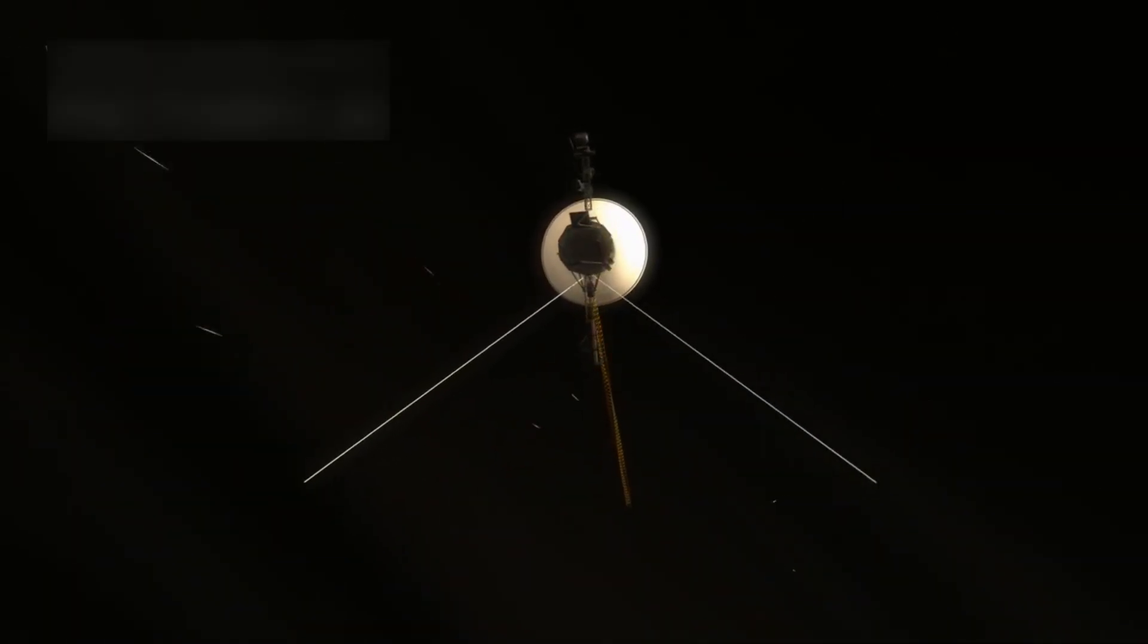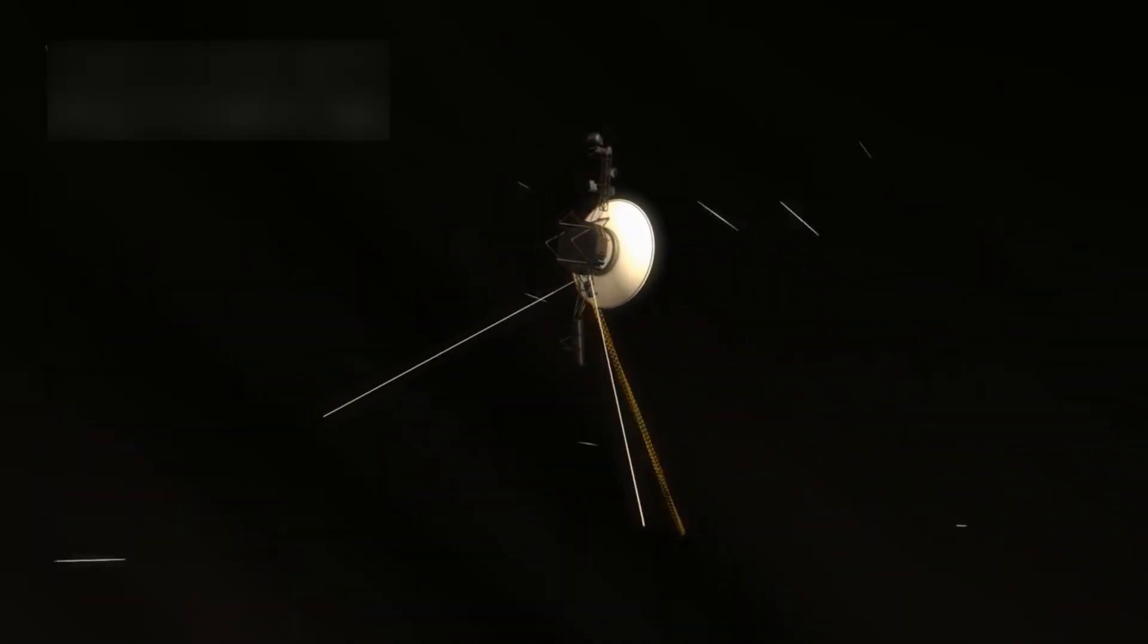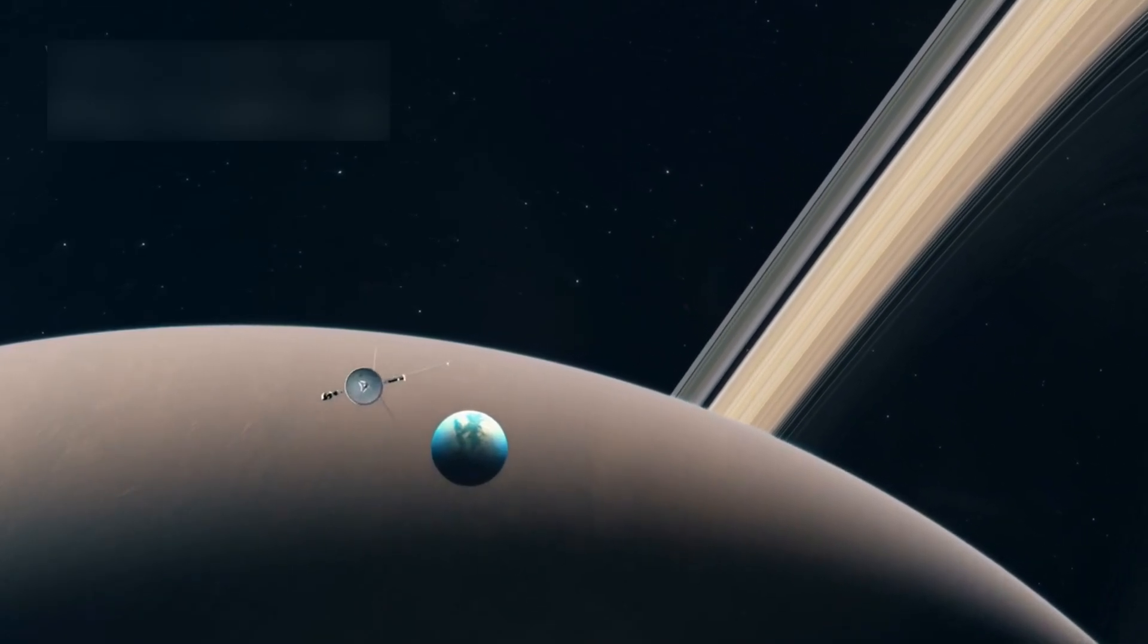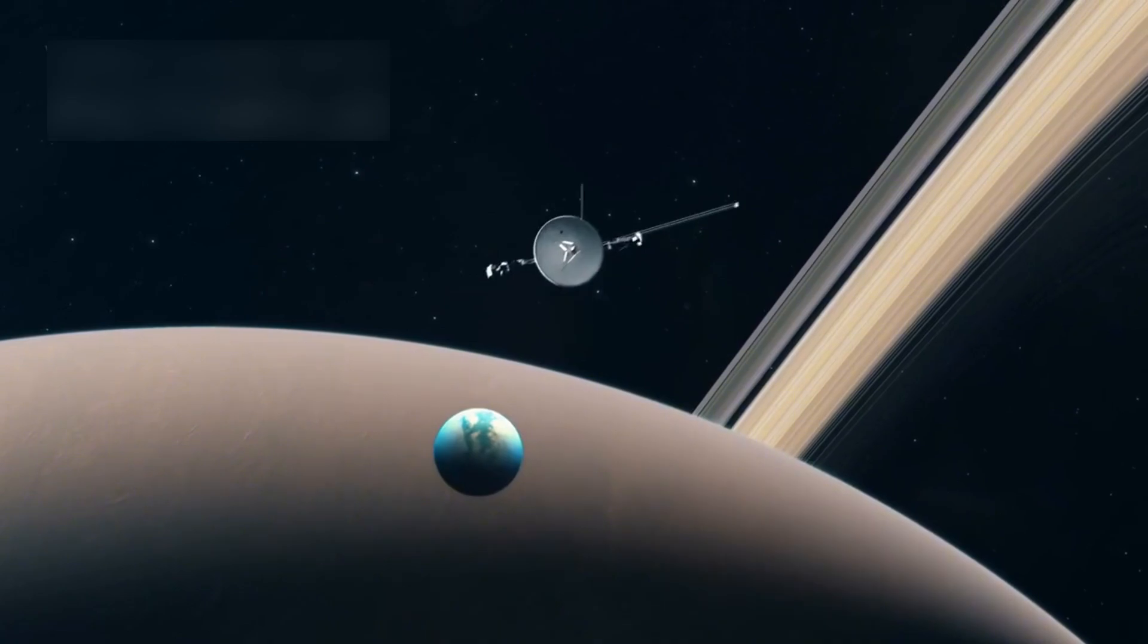As Voyager 1 kept flying, it continued to operate decades past its expected lifespan. It has now been working for over 45 years, traveling more than 14 billion miles from Earth.